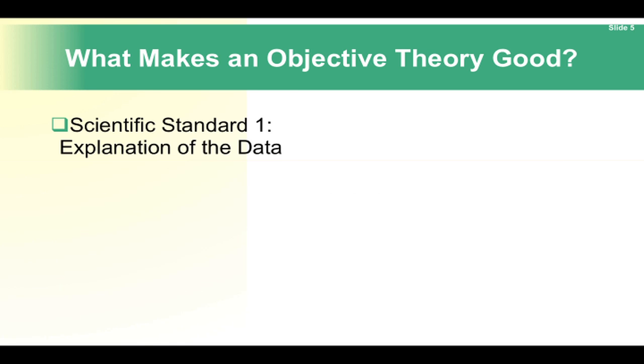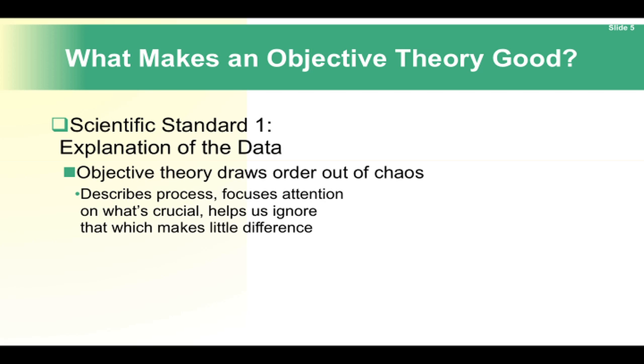Scientific Standard 1: Explanation of the data. An objective theory draws order out of chaos. It describes process, focuses attention on what's crucial, and helps us ignore that which makes little difference. The reason something happens becomes as important as the fact that it does happen.